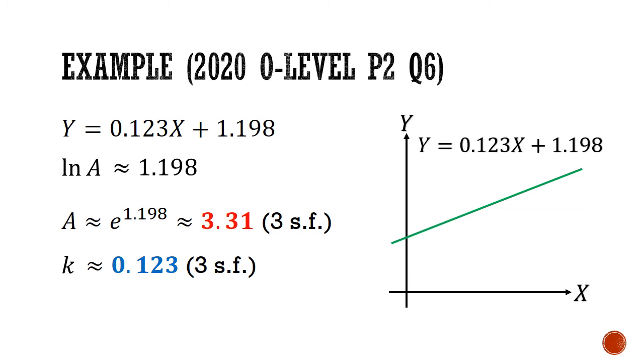But we are not done. The question doesn't want us to just find the values of A and k. It wants the equation for P. So we need to substitute the A and k back into the equation for P. So P equals A times e to the power of kx. So P equals 3.31 times e to the power of 0.123x. And that's when we are finally done.